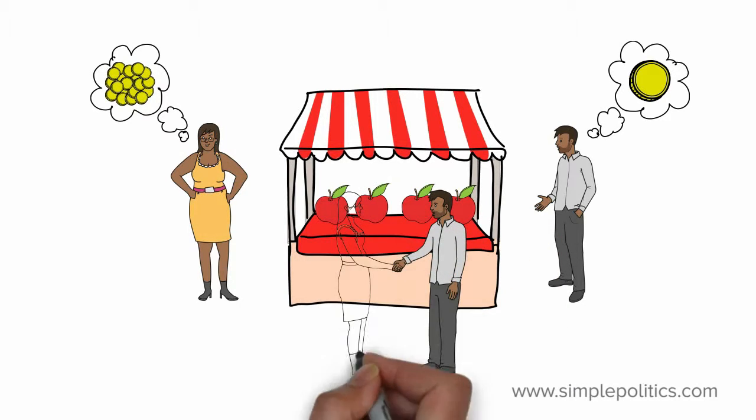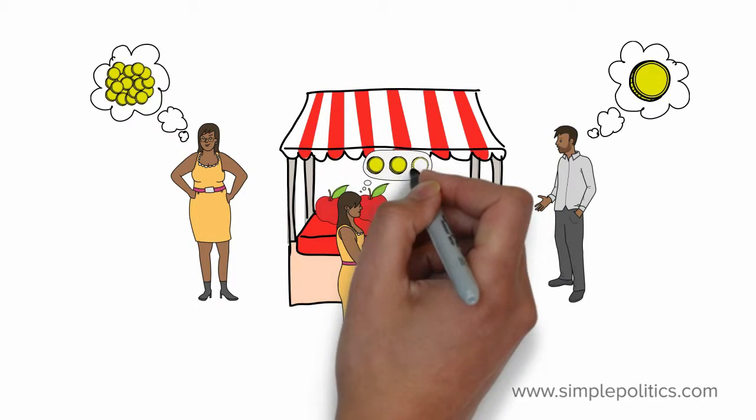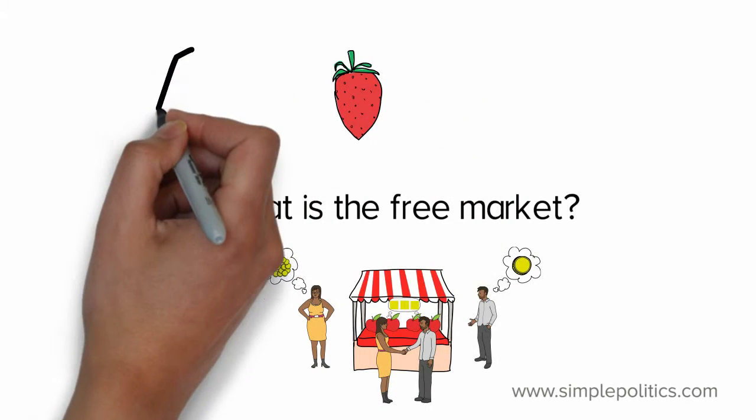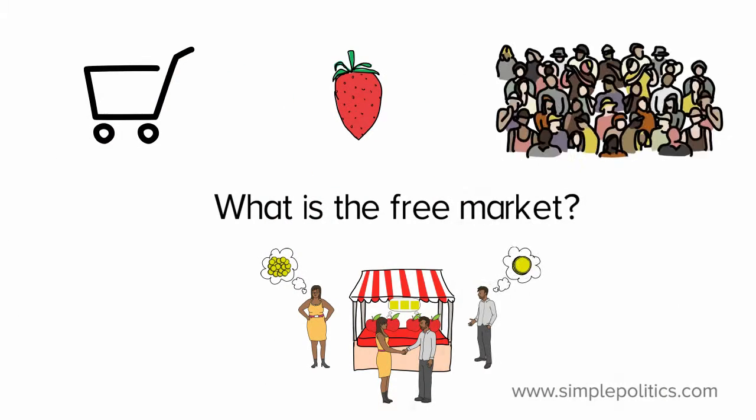So the free market is also why strawberries can be cheap in the supermarket but expensive at Wimbledon. The only thing that changes is the amount people are prepared to pay.